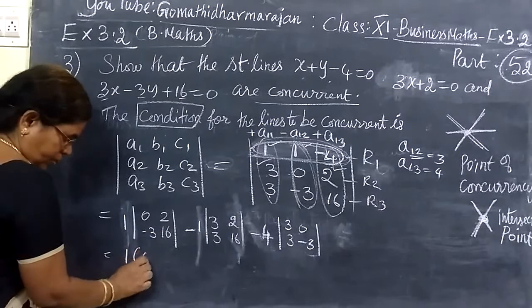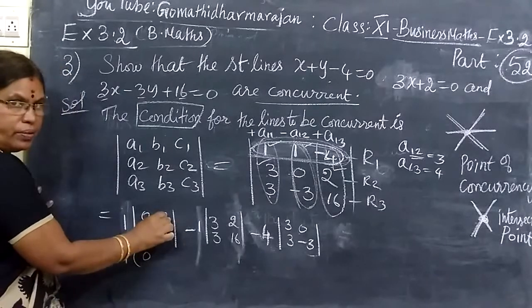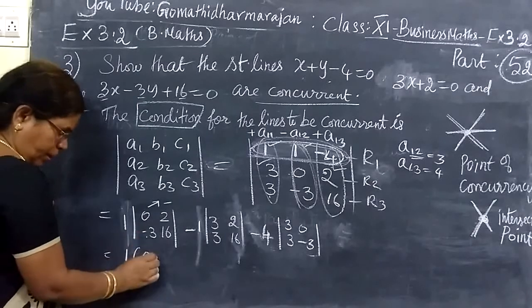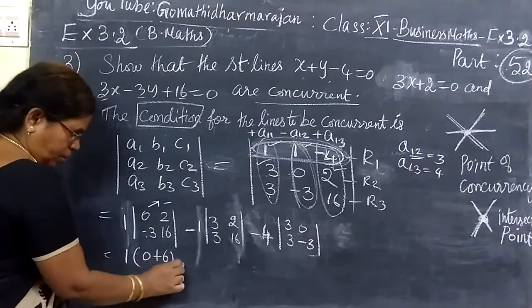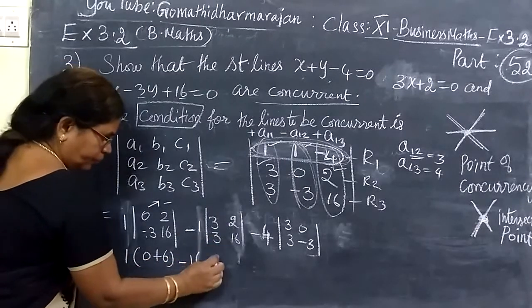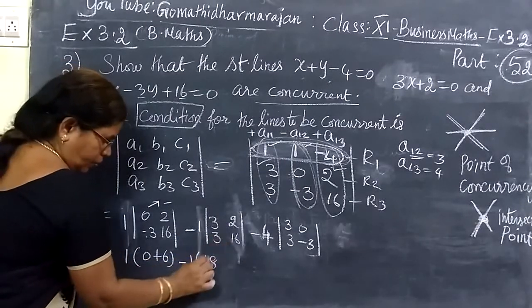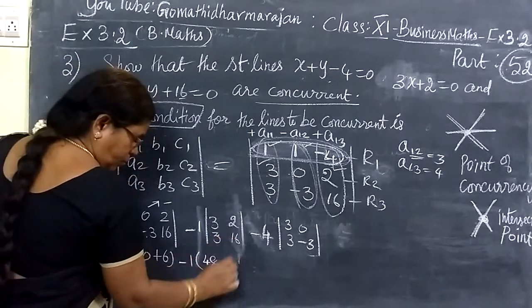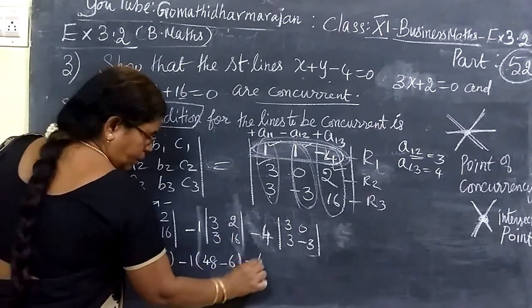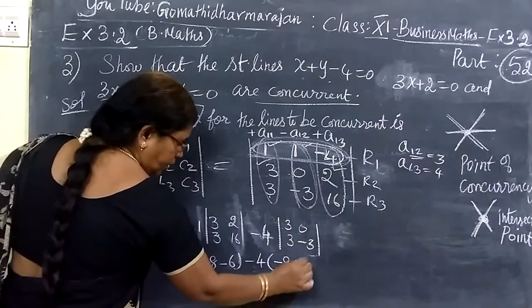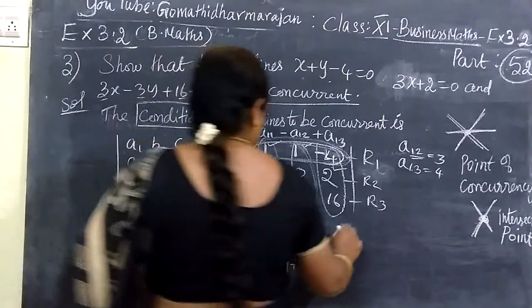So, 1 bracket is 0, minus 4 minus. 3, 2 is minus 1 bracket, 18 minus 48. And then minus 4 power minus 2. So, 3, 2 is 6. Then minus 4 bracket, minus 9, 0.